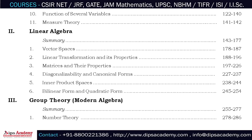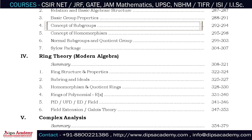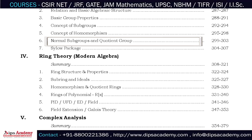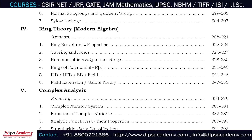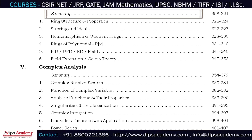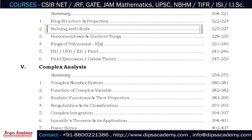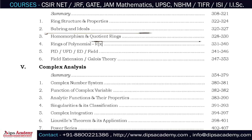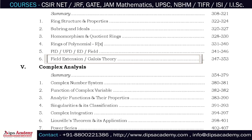The third chapter is Group Theory, starting with a summary, then questions and solutions on number theory, relations and basic algebraic structures, basic group properties, subgroups, homomorphism, normal subgroups and quotient groups, and Sylow's theorems. Next is Ring Theory, with a brief summary followed by questions on ring structures and properties, subrings and ideals, homomorphism and quotient rings, rings of polynomials, PIDs, UFDs, EDs, fields, and field extensions and Galois theory.